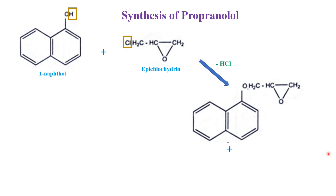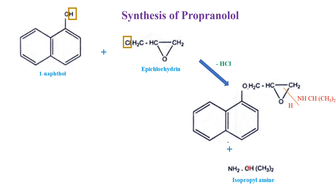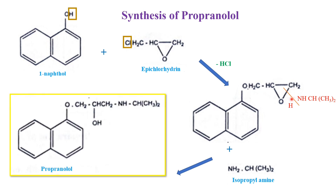Now, with this intermediate we add isopropylamine — that is, an isopropyl group with an amine. By the addition of isopropylamine, the bond between the carbon and oxygen of the epoxide is cleaved. H is added to the oxygen and the NH-CH(CH₃)₂ group is added to the carbon, and we get propranolol.